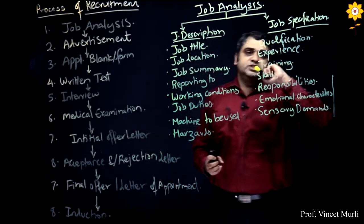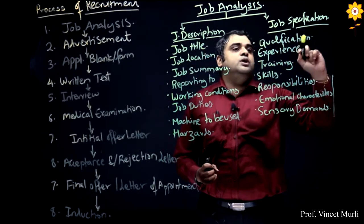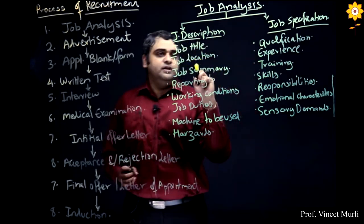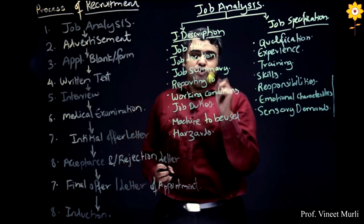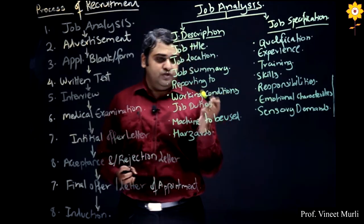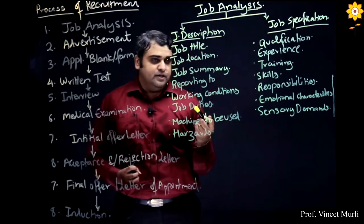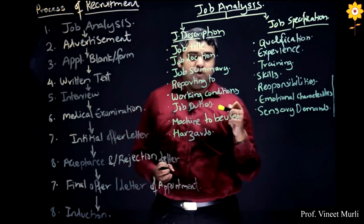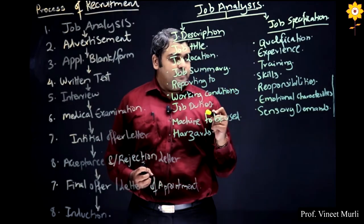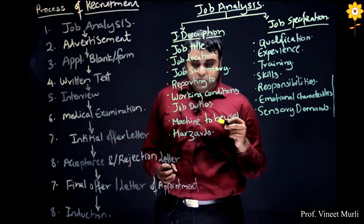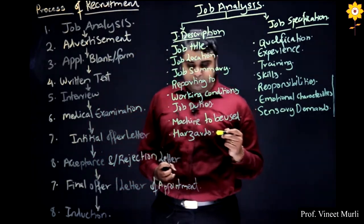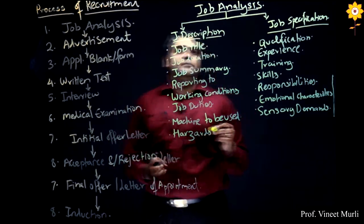The next part is job specification — the specific requirements you need in a candidate to do the job. Under job description, you have the job title, job location, a short summary of the job, who you will be reporting to, who your boss and subordinates are, the reporting system, rules and regulations, working conditions, job duties, responsibilities, what kind of machines and equipment you will be using, and the safety requirements or hazards related to working in the company.